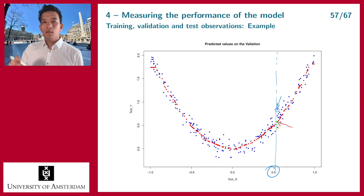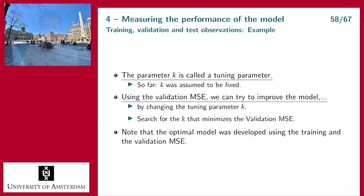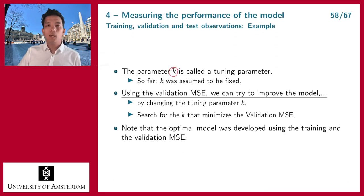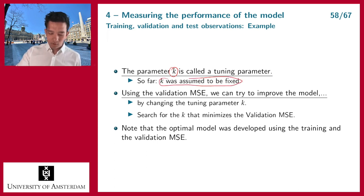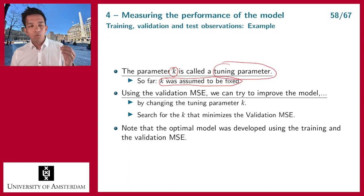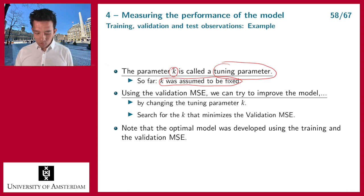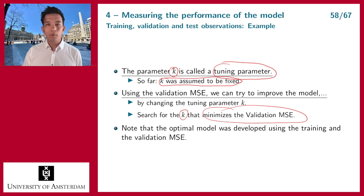In the KNN method you have to determine k, the number of neighbors in your NK set. So far k was fixed at 50. But k is a tuning parameter — you can set it to 60 or 40. You cannot determine the optimal k by minimizing the training MSE because the training MSE keeps decreasing as k decreases. However, we can search for the k that minimizes the validation MSE to find an optimal KNN model.